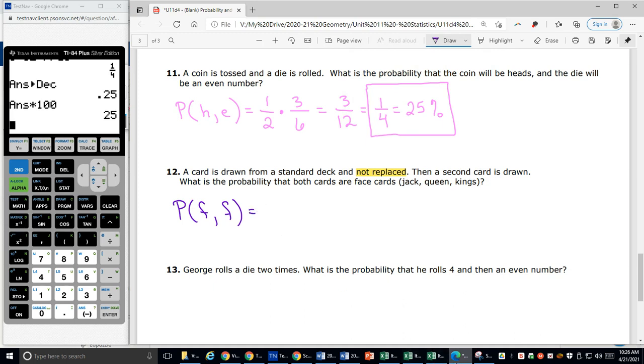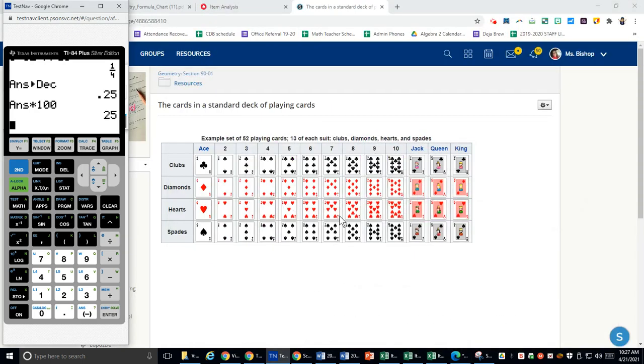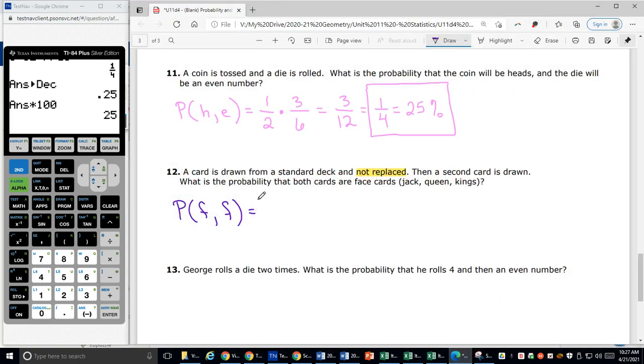So don't forget, we've already looked at in the first video, I showed you that in Schoology, in your resources folder, I've put a picture of a standard deck of cards. I want to know what are the chances that I'm going to pull a face card two times. I know there are 1, 2, 3, 4, 5, 6, 7, 8, 9, 10, 11, 12 face cards in a standard deck of cards. And a standard deck of cards has 52. So 12 out of 52 are how many face cards I can choose from for the first pull.